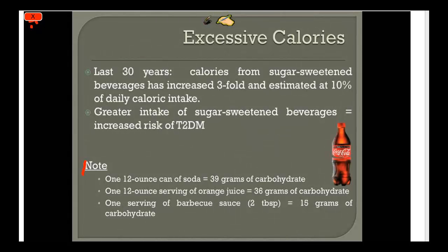Cutting calories from the diet may be easier than it seems. Over the past 30 years, sugar-sweetened beverage intake has increased about threefold, and an estimated 10% of daily calorie intake now comes from sodas and energy drinks. This greater intake has been linked to higher risk for type 2 diabetes and metabolic syndrome. Be sure to ask patients not only what they're eating but what they're drinking. One can of soda has about 39 grams of carbohydrate — for a diabetic, that's nearly their entire carb allowance for a meal.